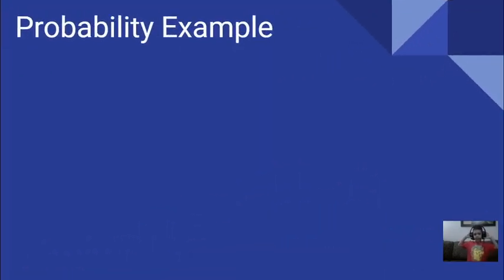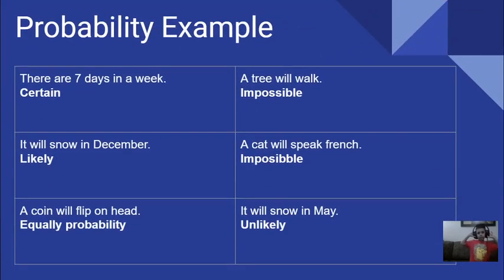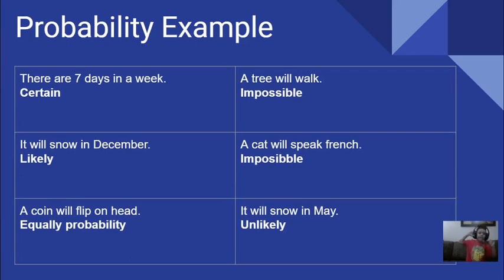Probability examples. There are seven days in the week. It will snow in December — likely. If we flip on heads — equal probability.